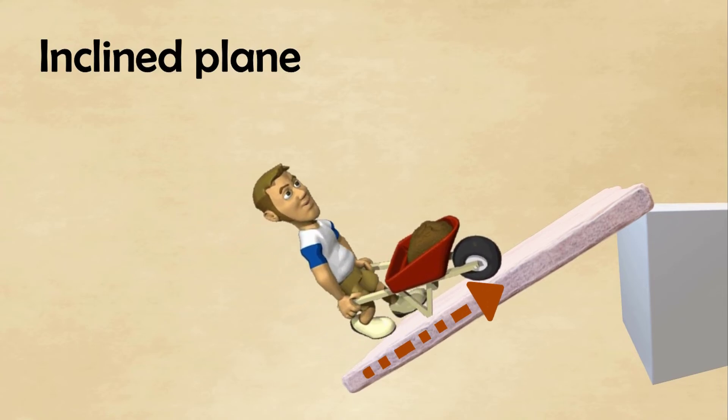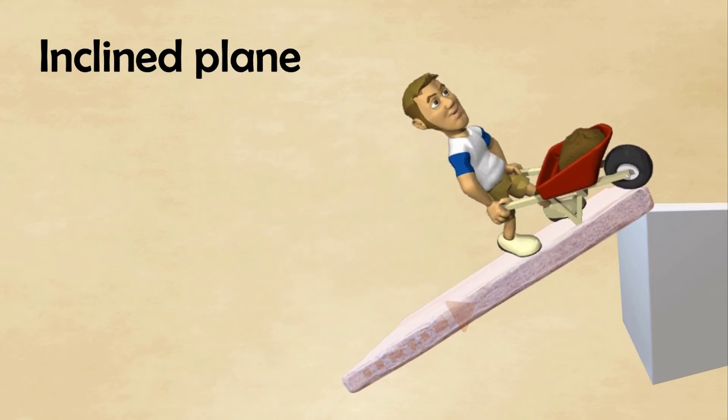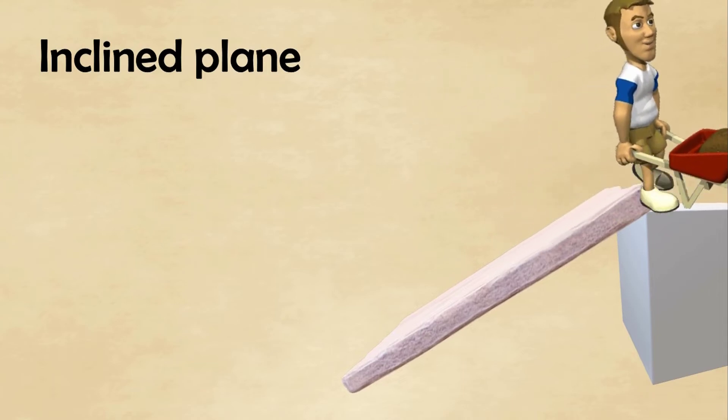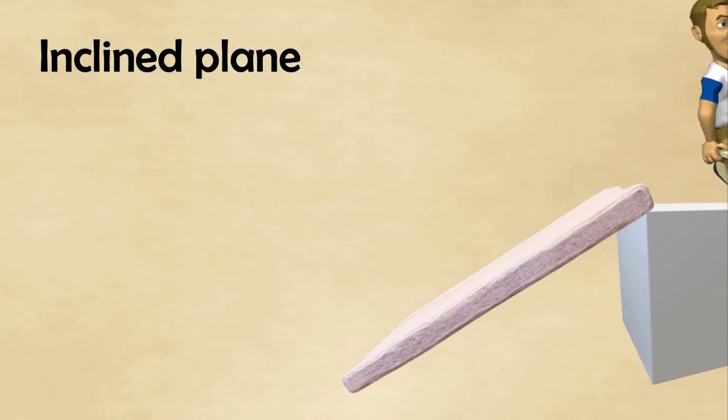Consequently, the sloping surface of the inclined plane supports part of the weight of the material as it moves up the ramp. Therefore, it takes less force to move the object off a level rather than putting it down.